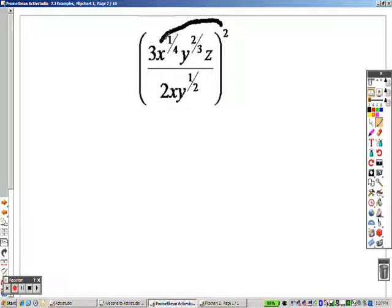Looking at something like this, I take a 2 through everywhere, so that is 3 squared.